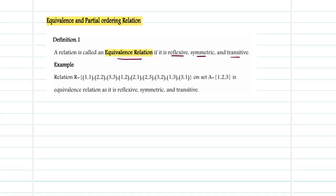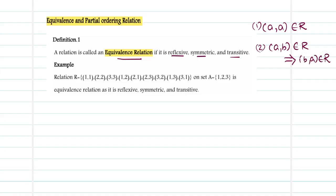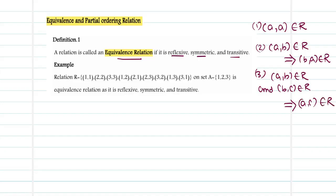That is: whenever (A, A) belongs to R, you call it reflexive. Whenever (A, B) belongs to R implies (B, A) also belongs to R, you call it symmetric. For transitivity, (A, B) belonging to R and (B, C) belonging to R implies (A, C) belongs to R. If all three are satisfied, then you call the relation an equivalence relation.